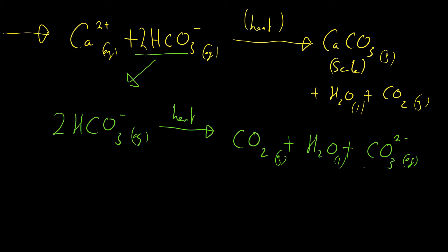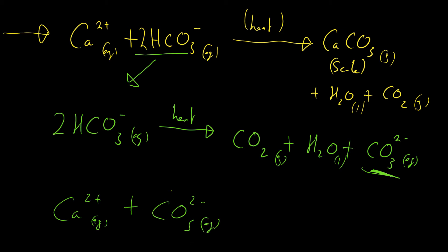Once we have formed the carbonate ions, those carbonate ions react with the calcium ions (Ca²⁺) already in the water. The charges cancel each other out, so it's a one-to-one ratio. This forms calcium carbonate, which is a solid — our scale. So it is a two-step process: forming carbonate ions from hydrogen carbonate ions, then adding those carbonate ions to calcium, which is why we can soften temporary hard water.